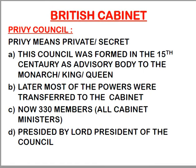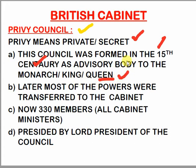Now let's look at the Privy Council. 'Privy' means private or secret. This council was made in the 15th century as an advisory body to the monarch — the king or queen. The monarch had administrative and military responsibilities and could not manage things alone, so he needed an advisory body. This body was his private personal council, and so it became known as the Privy Council.